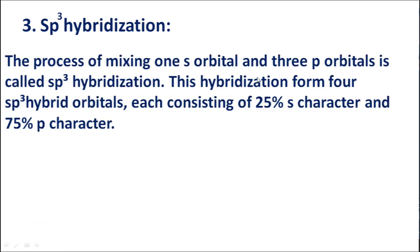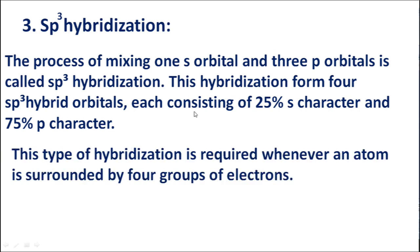The next type is SP3 hybridization. The process of mixing one S orbital and three P orbitals is called SP3 hybridization. This hybridization forms four SP3 hybrid orbitals, each consisting of 25% S character and 75% P character. This type of hybridization is required whenever an atom is surrounded by four groups of electrons.